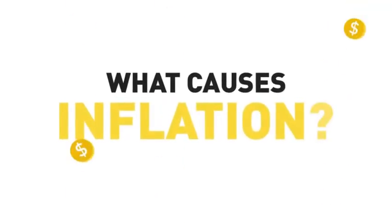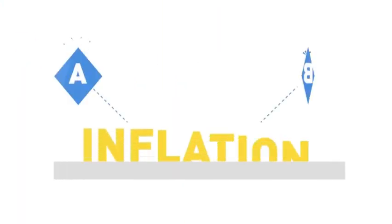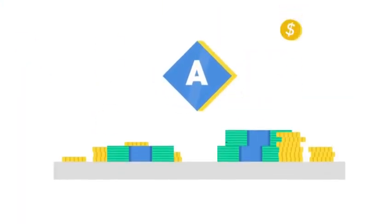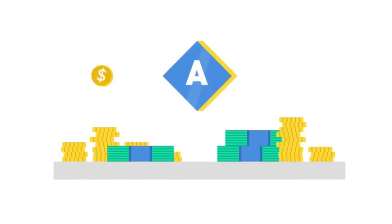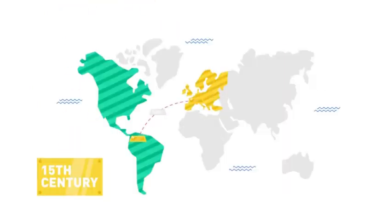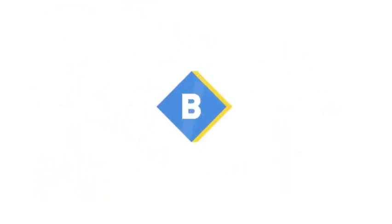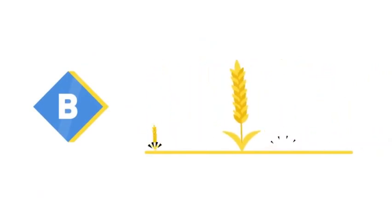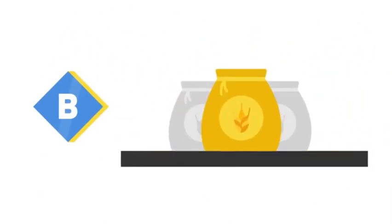What causes inflation? Economists have identified two basic causes of inflation. First, there must be a rapid increase in the amount of actual currency in circulation. Second, inflation can occur due to a supply shortage in a specific good that is in high demand.